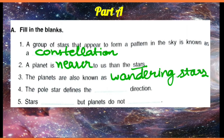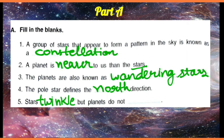The pole star defines the dashed direction. As we know that it lies in the north, so it indicates the north direction. Stars dash, but planets do not dash — so, stars twinkle but planets do not twinkle.